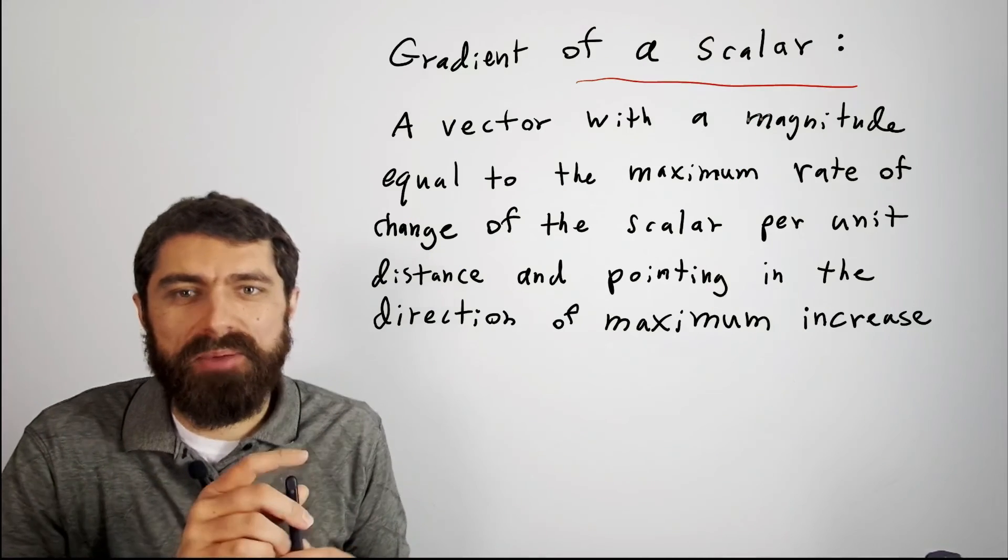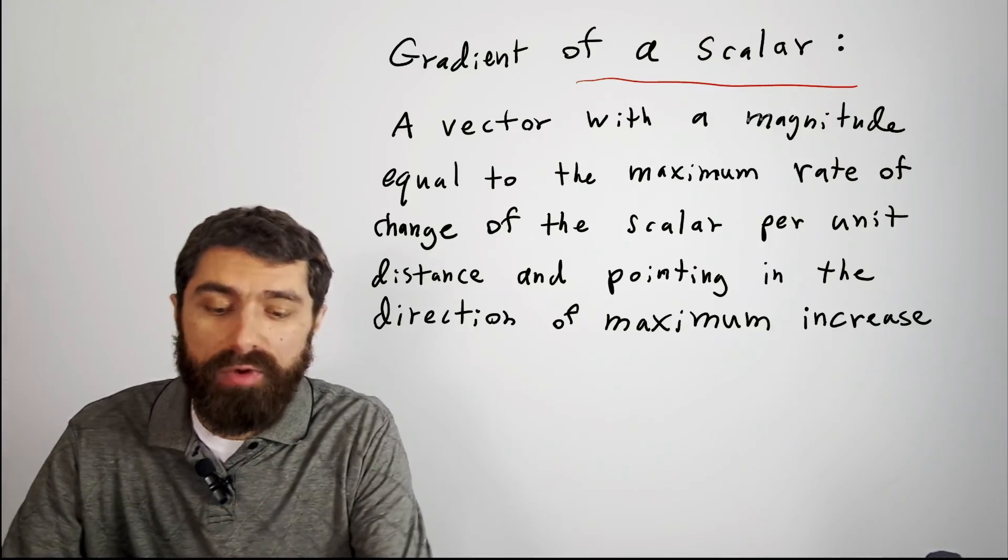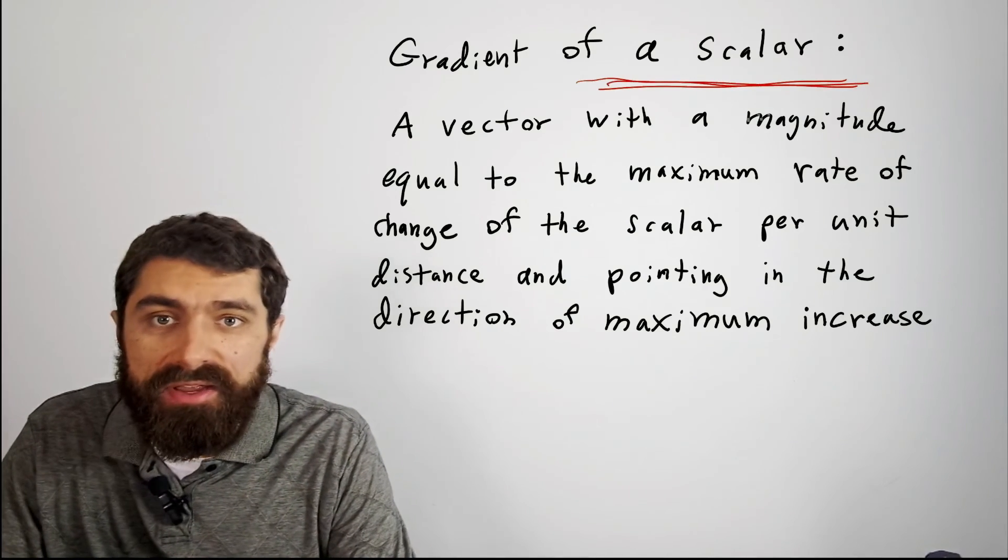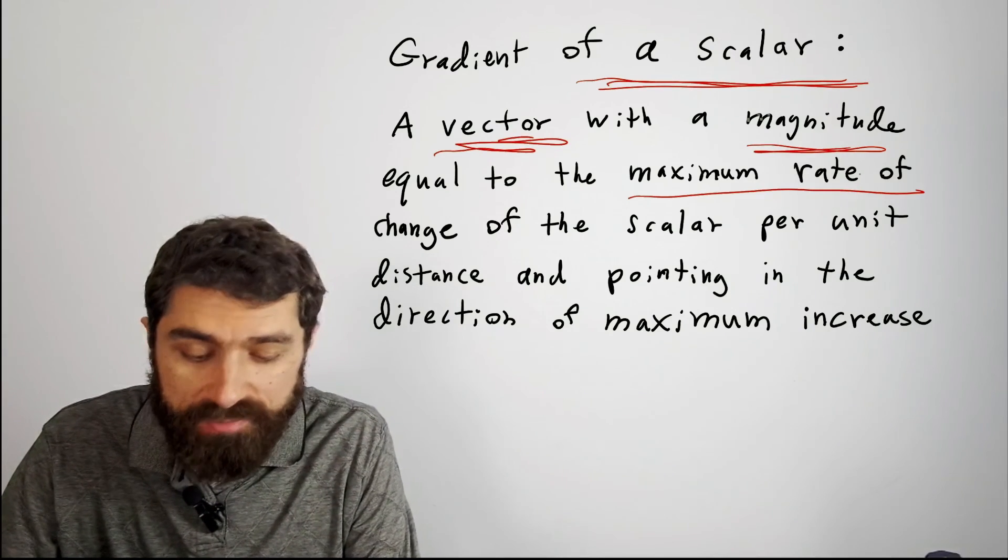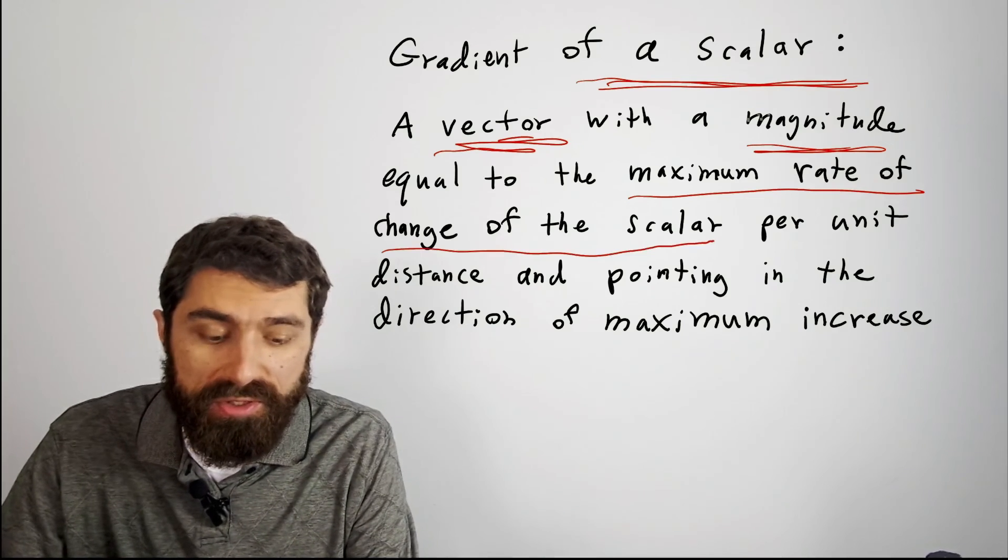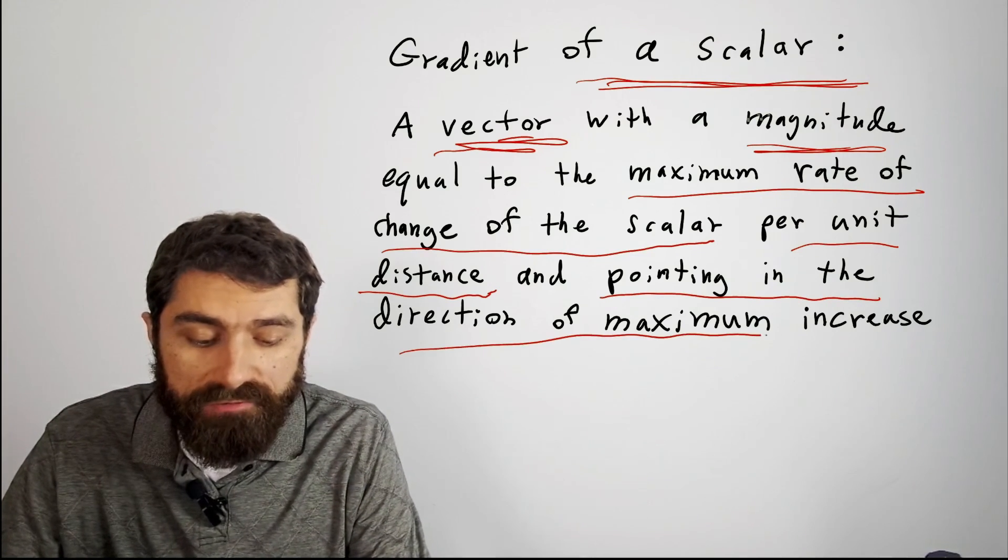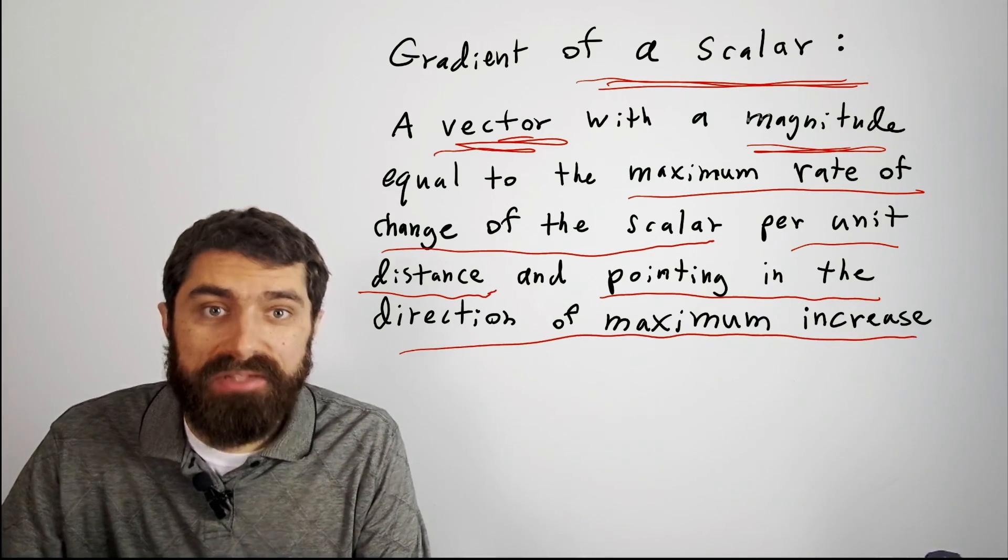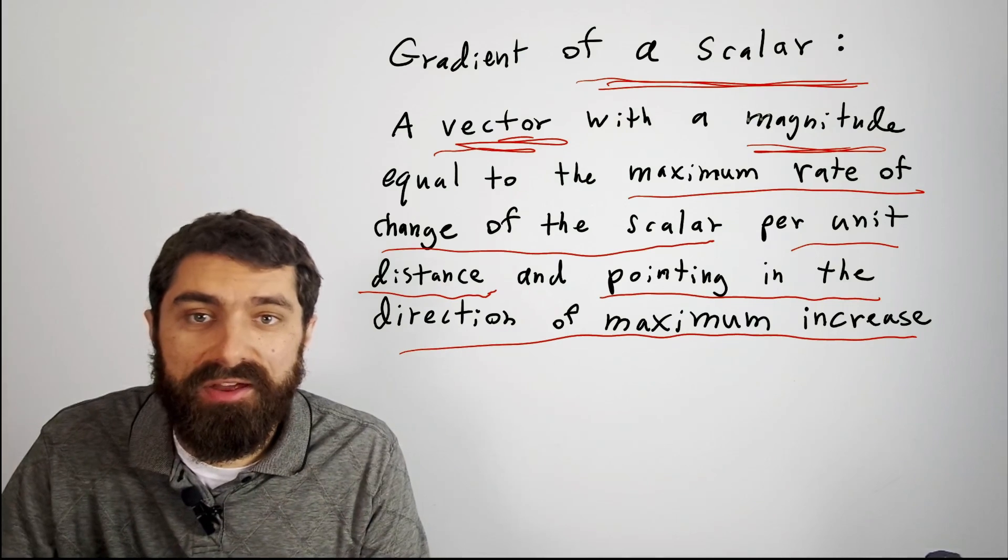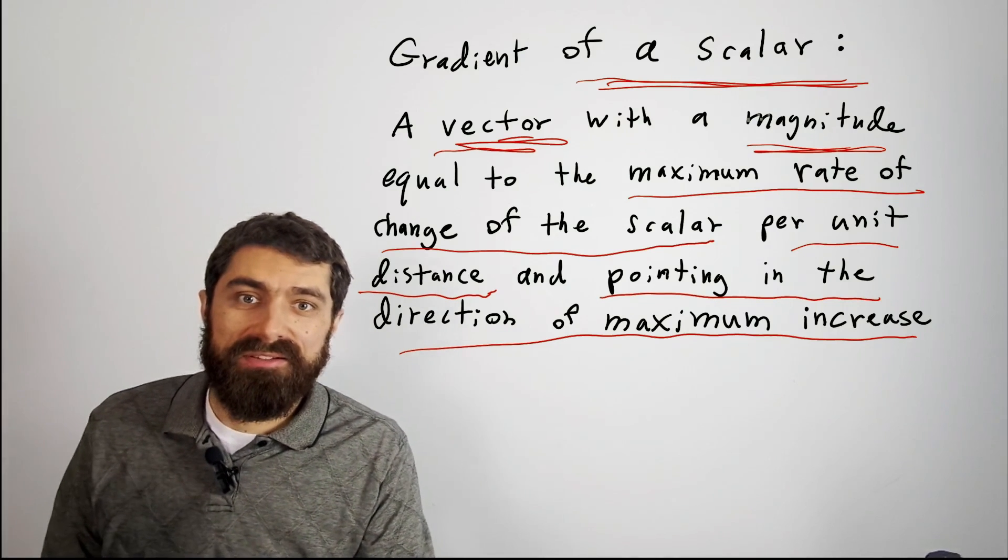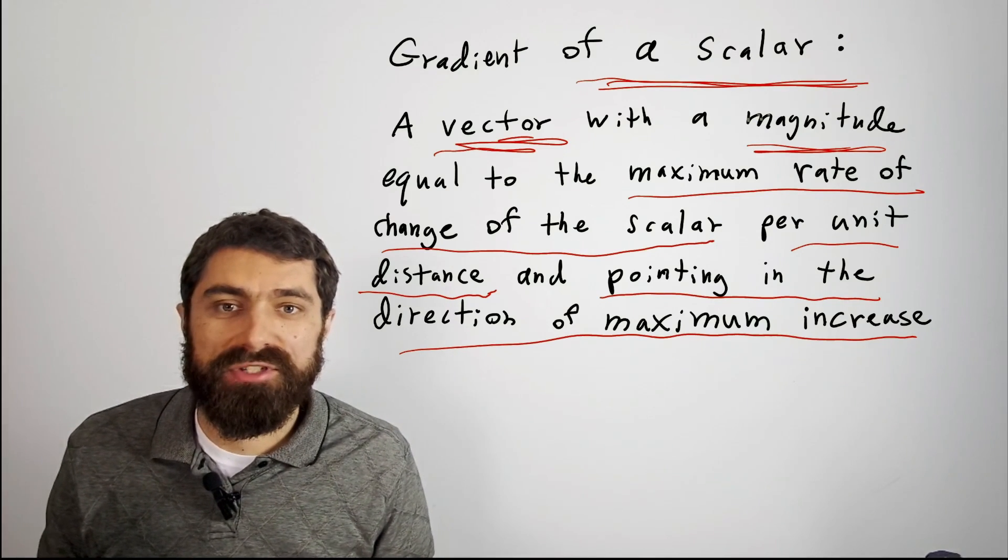All right, so we could summarize all that we've been saying with more formal language and say that the gradient of a scalar is a vector that has a magnitude equal to the maximum rate of change of the scalar per unit distance and pointing in the direction of maximum increase. So that per unit distance is in the direction of maximum increase. So that's the gradient, and in the next video we'll get into divergence and curl.